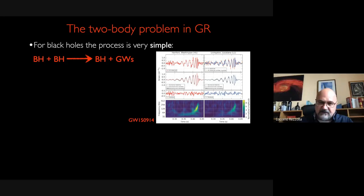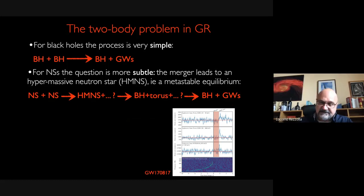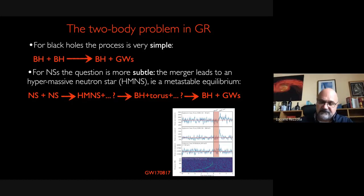In the case of neutron stars, you can think of this again as a scattering problem. You start with two neutron stars and end up with a black hole plus gravitational waves. But in between this sequence, two important things happen. The first is that you produce what we call a hypermassive neutron star, or HMNS. This is an object that cannot exist in nature, at least not through quasi-stationary transformations — it is a metastable equilibrium. So this object will want to collapse to produce a black hole, and because there will be some matter around it, you produce what we call a torus — a disk of matter around the black hole.